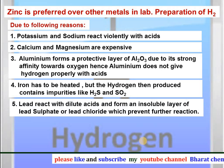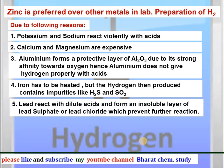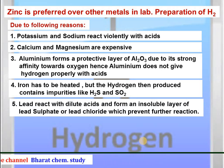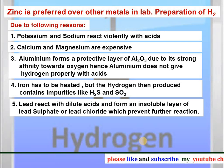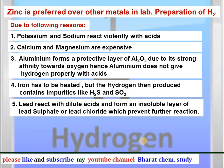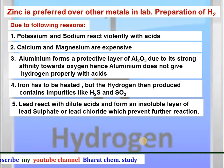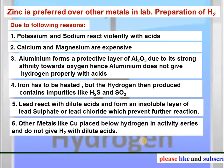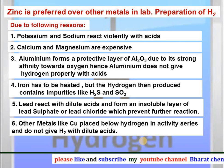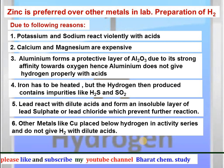Lead reacts with dilute acid and forms an insoluble layer of lead sulfate or lead chloride which prevents further reaction; therefore lead is also not used for the preparation of hydrogen. Other metals like copper are placed below hydrogen in the activity series and do not give hydrogen gas with dilute acids.